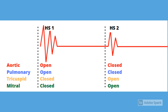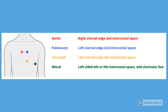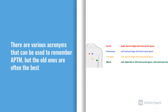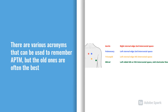There's a mnemonic that helps remember the surface anatomy for examining patients: All Prostitutes Take Money — A is aortic, P is pulmonary, T is tricuspid, and M is mitral.